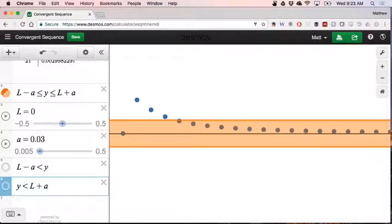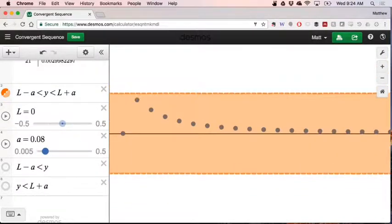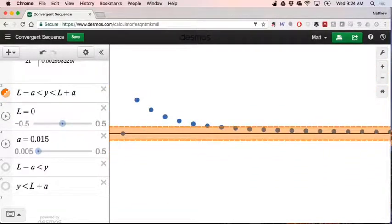So here's an example of a sequence that's actually convergent. Its limit is zero. We know that it's convergent because no matter how small of an epsilon that I place for my little epsilon tube around y equals zero, eventually my sequence enters that strip and it never leaves. And so the limit of this sequence actually is zero.